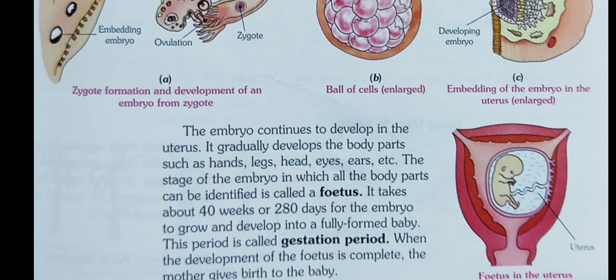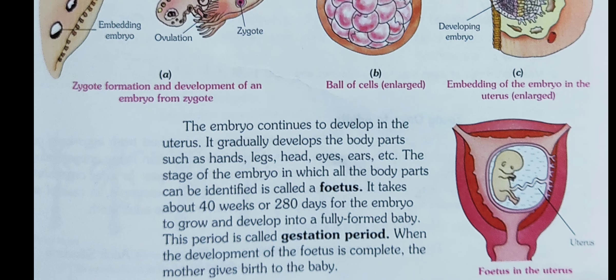When the development of the foetus is complete, the mother gives birth to the baby. You can see this in the figure as well. In the next class, we will study about oviparous and viviparous animals, and asexual reproduction such as budding in Hydra. Bye.